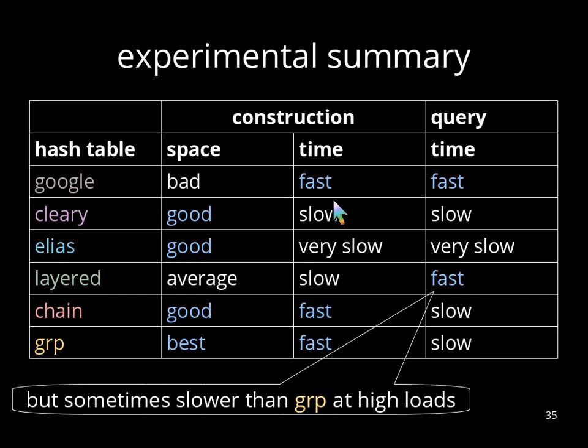We summarize our experiments as follows. On the one end is Google, taking the most space, but also being the fastest solution. On the other end is Elias, being one of the most space-efficient solutions, but also being very slow. Cleary has good space requirements, but otherwise is slow. Layered is on average at space, but sometimes fast at querying, but also sometimes slower than group at higher loads. On the other hand, group and chain behave at space requirements very good, group is best, and at construction they are fast, but for querying they are slow.